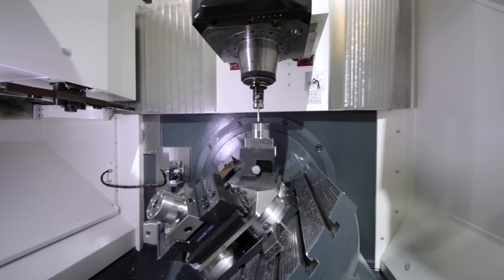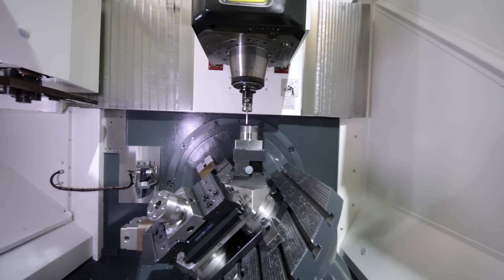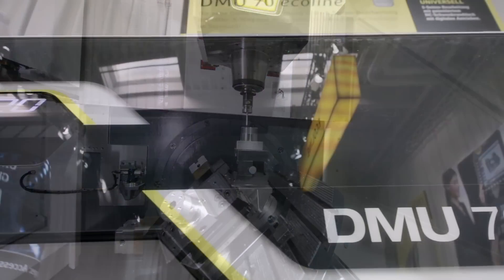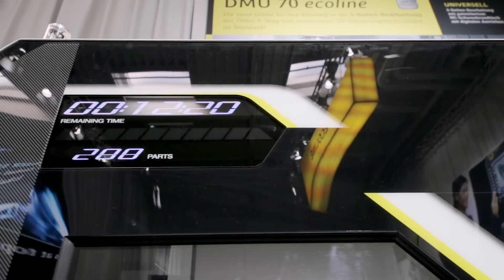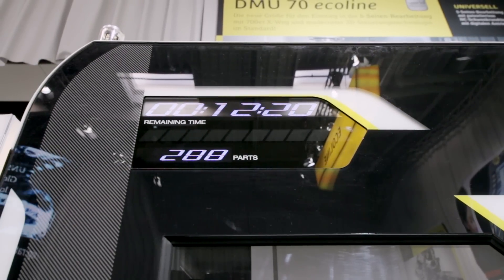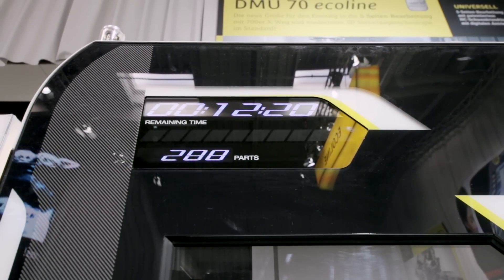A nice gadget we have, we call it the progress line. There you can see from a bigger distance the cycle time, the remaining cycle time which goes down, and the parts that I produced today or the parts that I produced in this cycle.